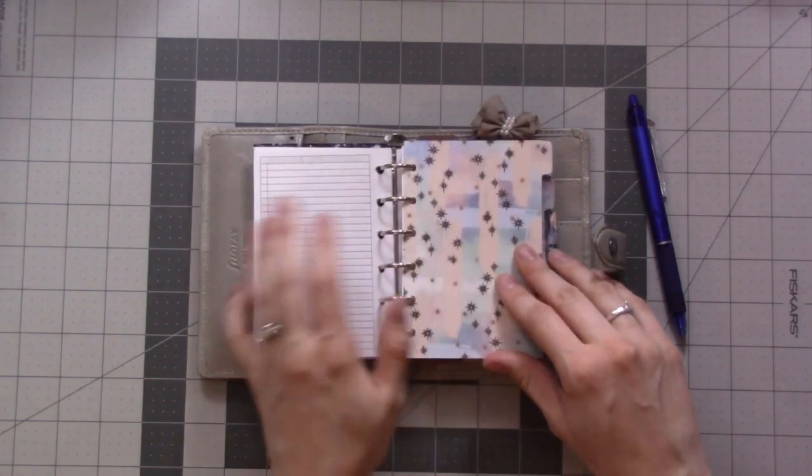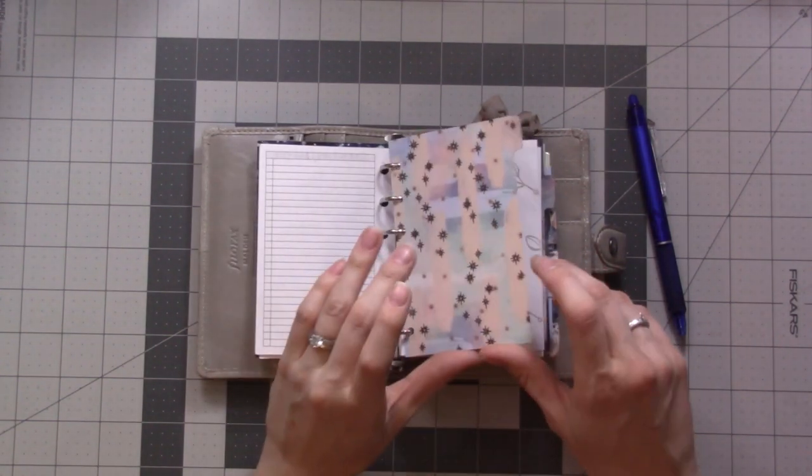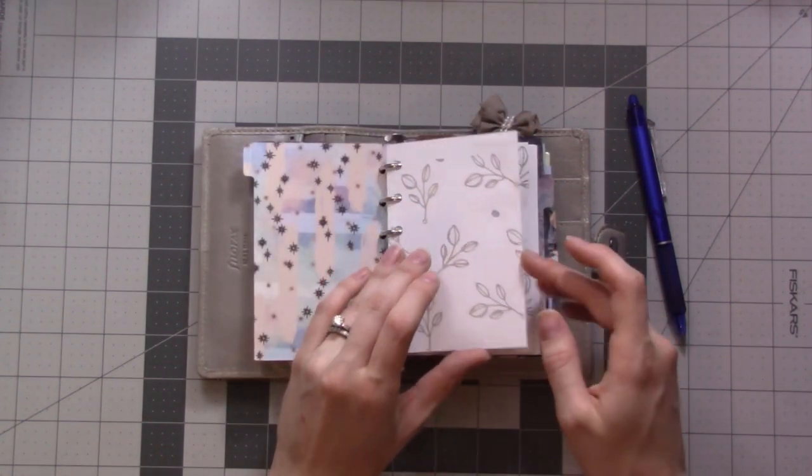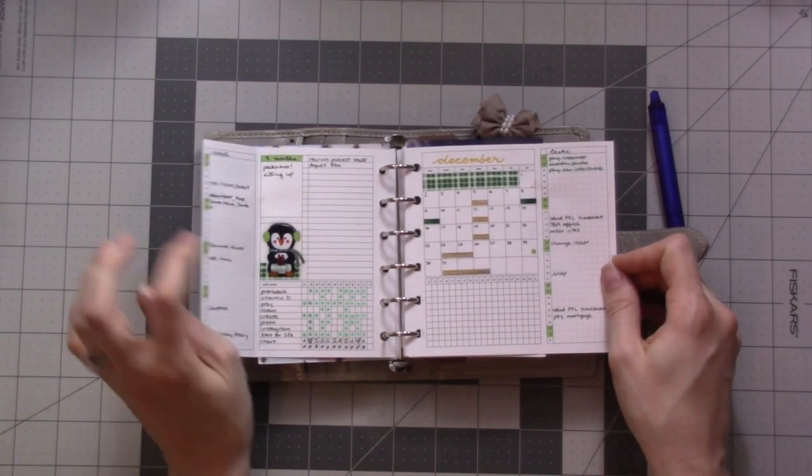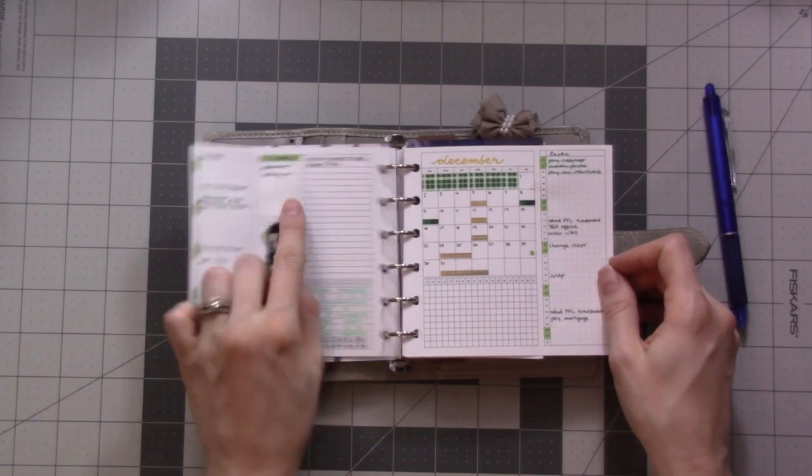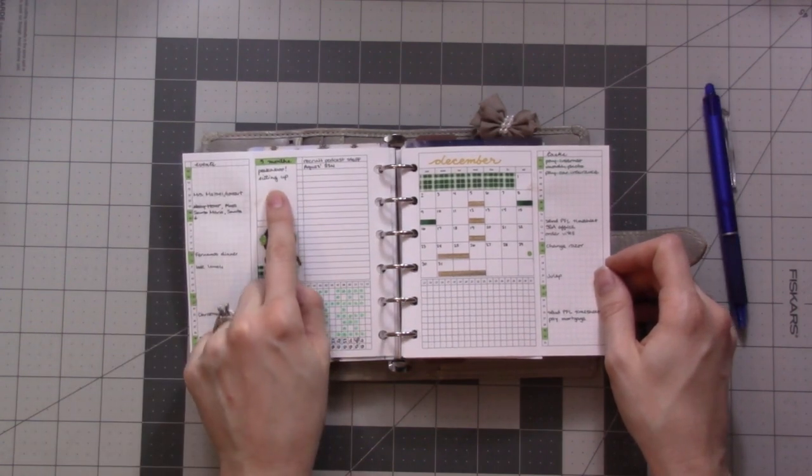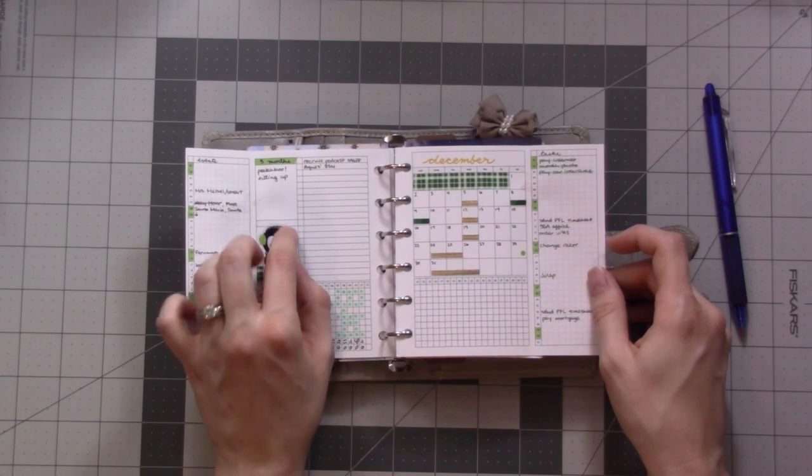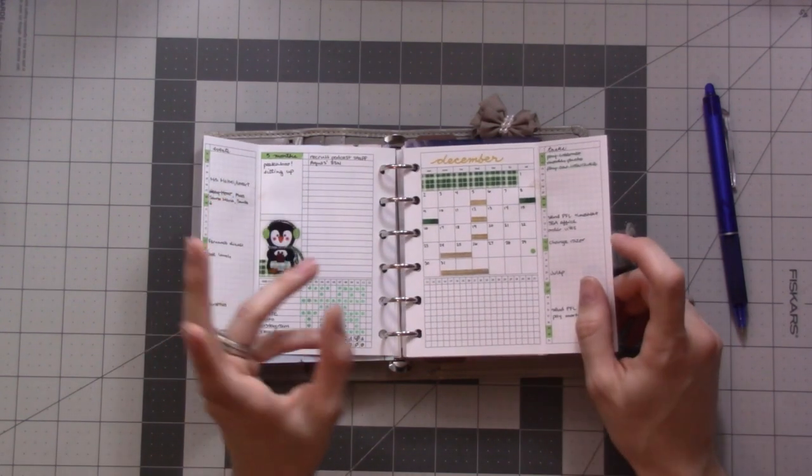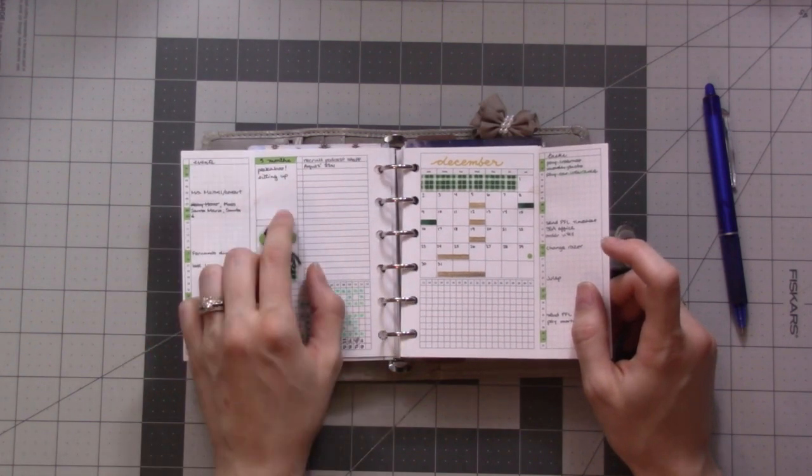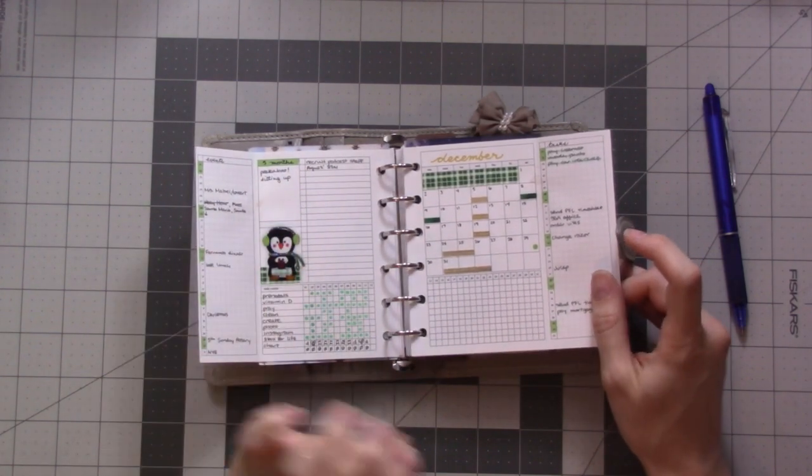That's the front section of my to-do lists. Next section is monthlies. I've got my monthly here. I did a setup video or a plan with me for this. You can see I'm doing okay on my tracker. I'm using this to track baby's milestones. She's playing peekaboo and she's sitting up really well.